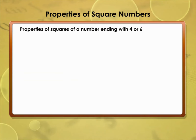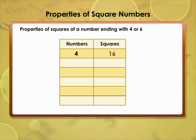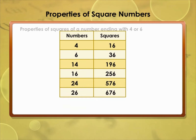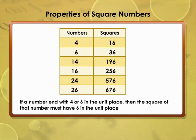Properties of squares of a number ending with 4 or 6: if a number ends with 4 or 6 in the unit's place, then the square of that number must have 6 in the unit's place.